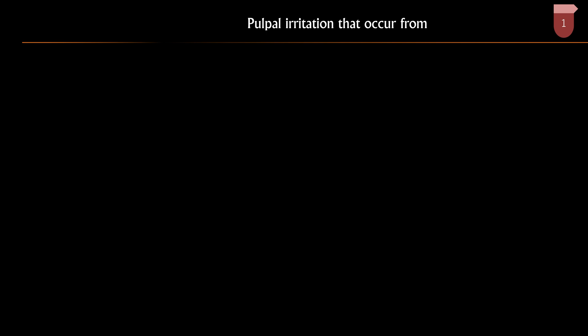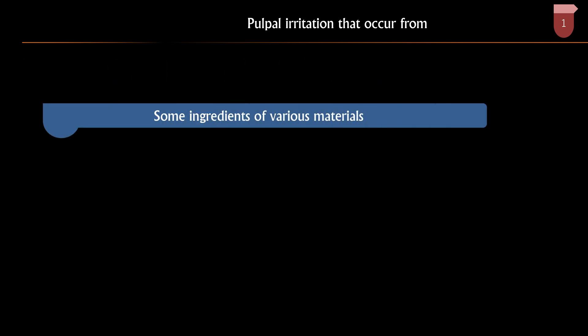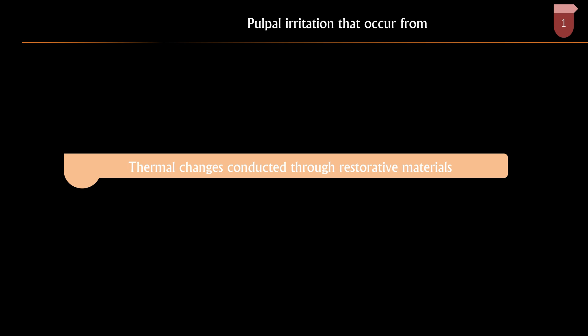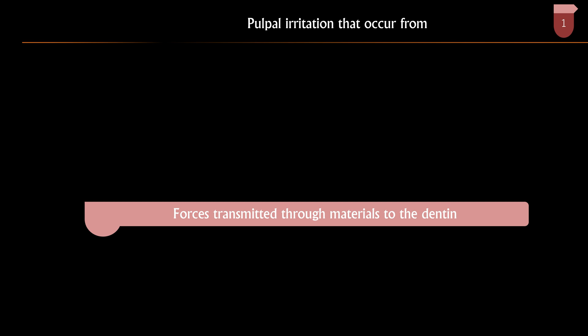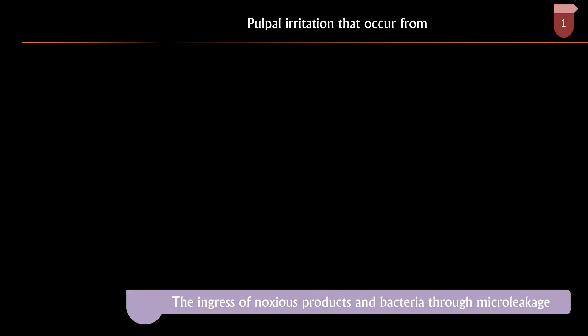We should know why we have to protect the pulp. The pulp is a soft tissue hiding inside the hard casing of enamel and dentine. The pulp must be protected from many insults that could happen during tooth preparation or because of decay. Common reasons for irritation or assault to the dental pulp include: heat generated by rotary instruments, ingredients of various restorative materials, thermal changes conducted through metallic restorations, forces transmitted through materials to the dentine, galvanic shock, and ingress of noxious products and bacteria through micro-leakage.